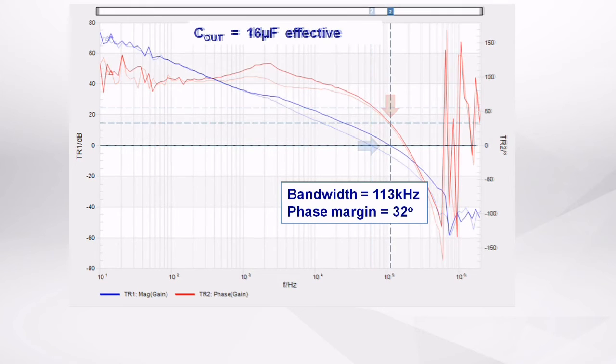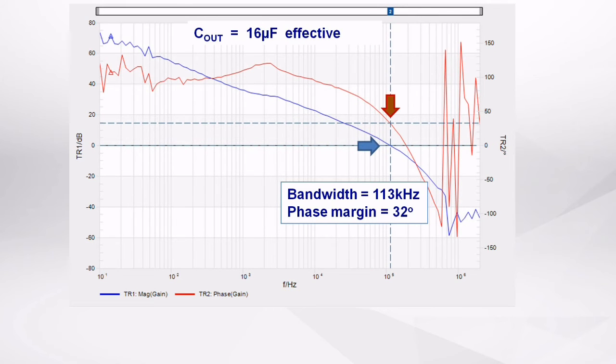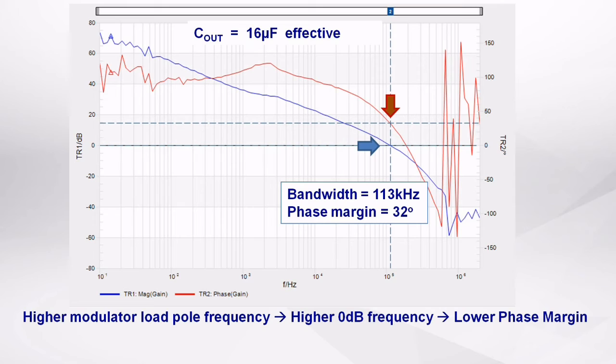This lower output capacitance increases the modulator pole frequency, and the open-loop unity gain frequency will increase to a point where the phase margin is lower. This also explains why we measured a higher bandwidth with the fast transient measurement.